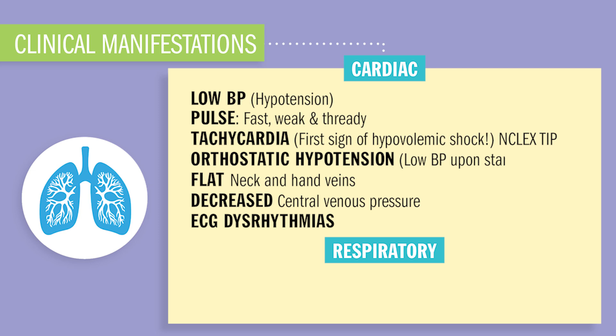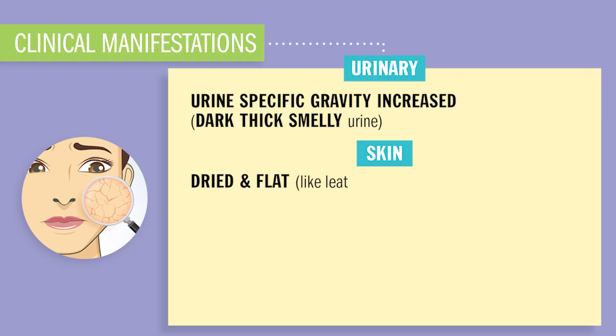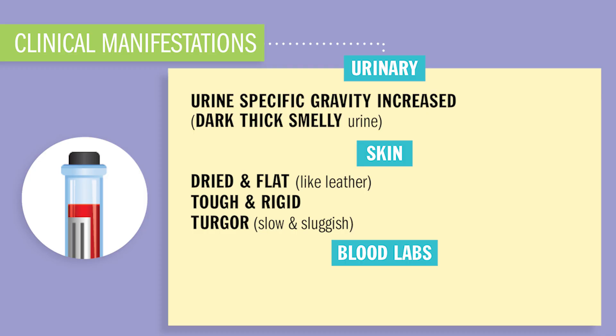Lab values will be high and dry. For the respiratory system, it'll be harder to transport oxygen with this thick, syrupy blood, so you'll have a high respiratory rate called tachypnea and difficulty breathing called dyspnea. Urine specific gravity is going to be increased — basically heavy, dark, and smelly urine. The skin will be dry and flat, kind of like leather — tough and rigid — and you'll have slow skin turgor, meaning when you pinch the skin it returns to normal very slowly. Lab values will be thick like paste from that lack of fluids — basically hemoconcentration.